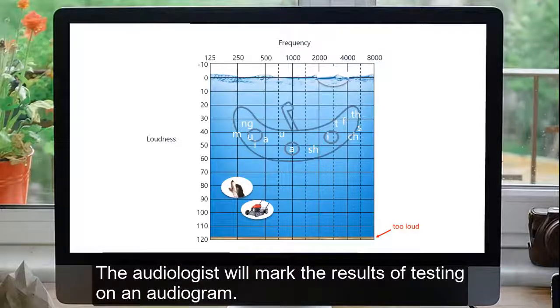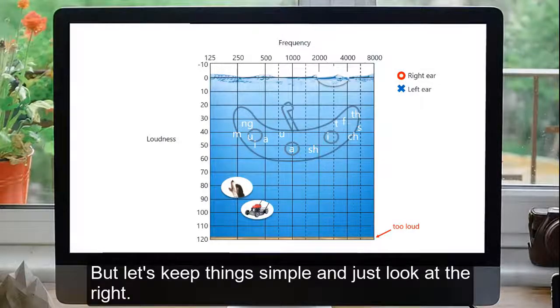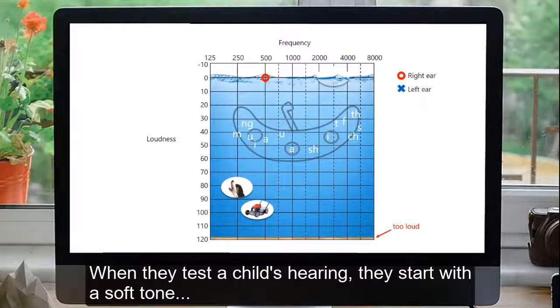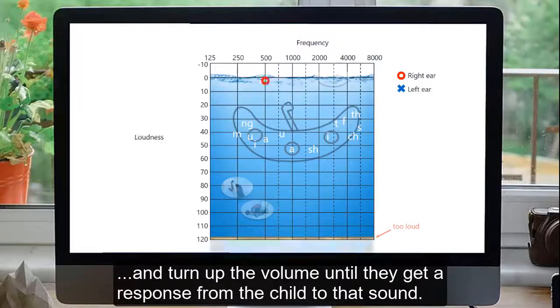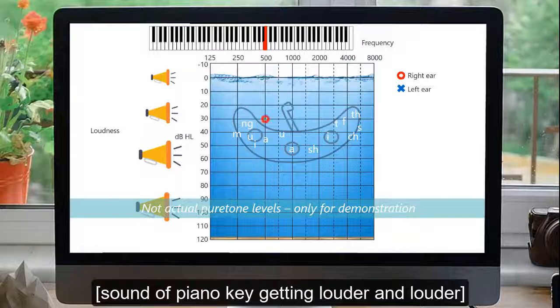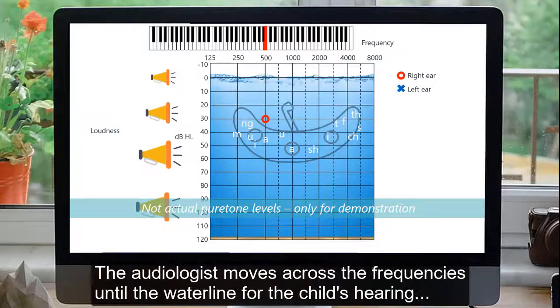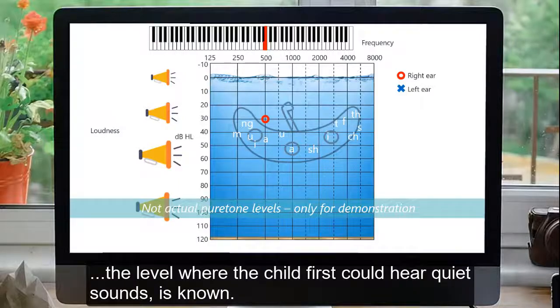The audiologist will mark the results of testing on an audiogram. They use a circle for the right ear and an X when showing the results for the left. But let's keep things simple and just look at the right. When they test a child's hearing, they start with a soft tone and turn up the volume until they get a response from the child to that sound. The audiologist moves across the frequencies until the waterline for the child's hearing, the level where that child first could hear quiet sounds, is known.